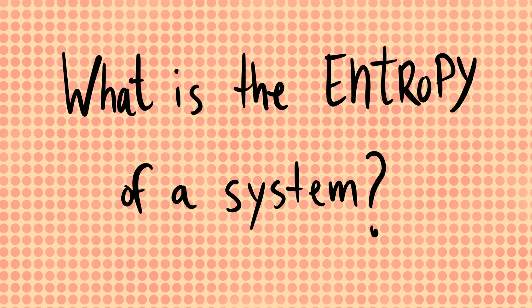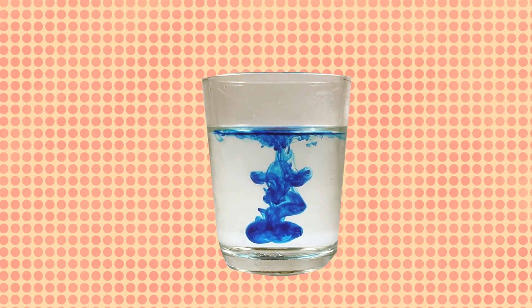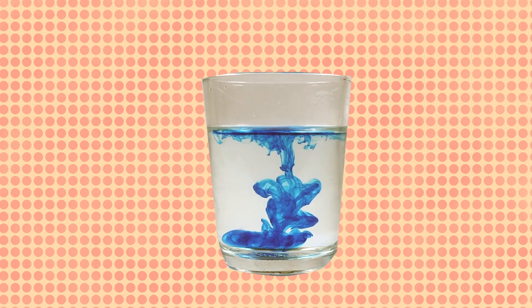But what exactly is the entropy of a system? Well, systems are made of many small parts. Entropy measures in how many ways you can arrange the parts so that the whole system still has the same large-scale properties. This is a little abstract, so let's consider an example.